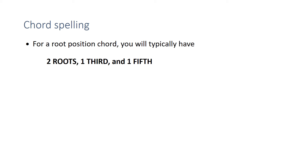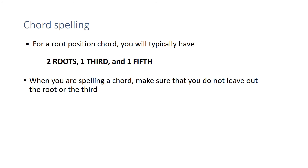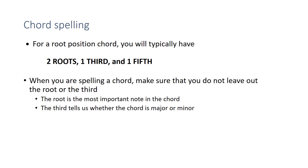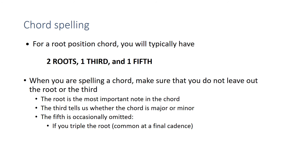Chord spelling: overall, for a root position chord you want two roots, one third, and one fifth. Make sure you don't leave the root out. You also don't want to leave out the third, or you won't be able to hear the quality of the triad — it's the third that tells us if a chord is major or minor. The root is most important, the third tells us the quality, and the fifth is occasionally left out; it's not quite as crucial. Even in four parts, you can omit the fifth if it improves the voice leading — this would probably mean tripling the root, so three roots and one third, which is common at a final cadence. It's less common to have two roots and two thirds. So those are the voice leading basics, and I think you're ready for the quiz.